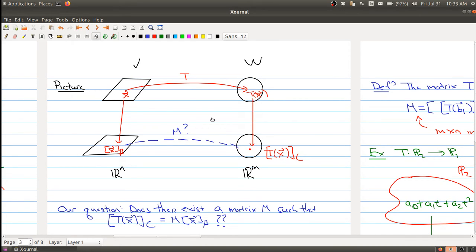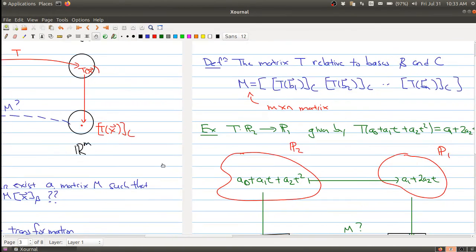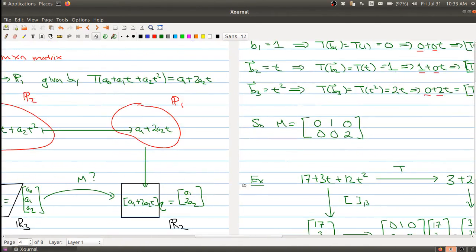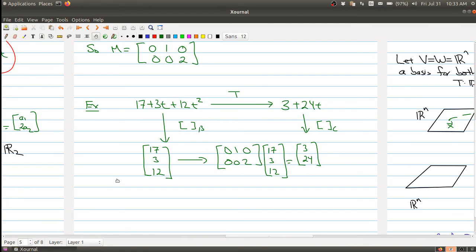So really, linear transformations, one way to think about it is, it's really determined by how you're changing your coefficients. And so what we're doing is we're just keeping track of the coefficients. And the matrix M is keeping track of how the coefficients change.